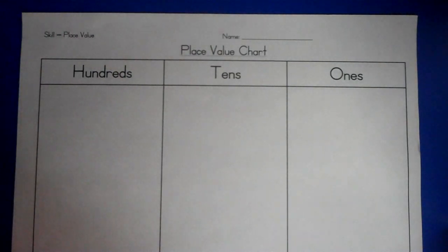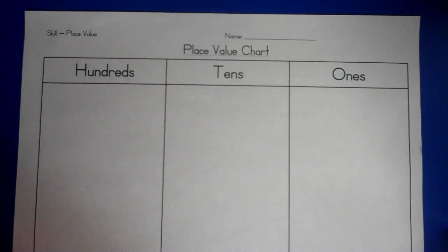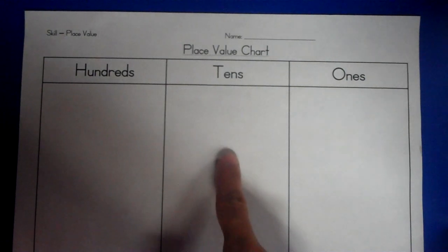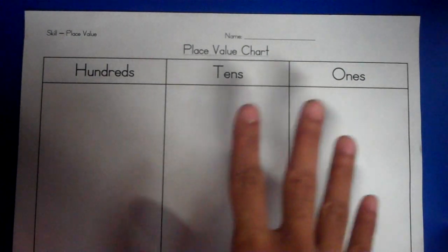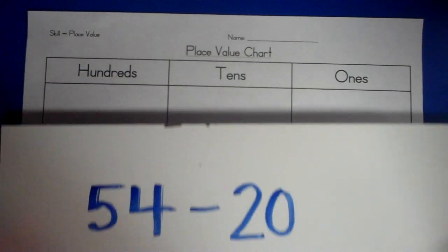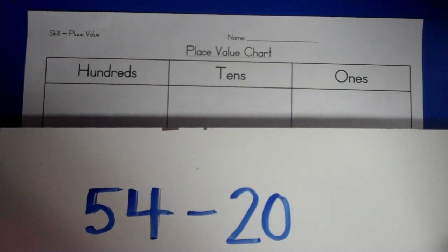Hi, scholars. Today we are going to be learning how to subtract when we have two digits and subtract two digits from that. But the catch is that today we're only going to be subtracting a certain number of tens from a given number that we start with. So let's start with our first problem, which is 54 minus 20.